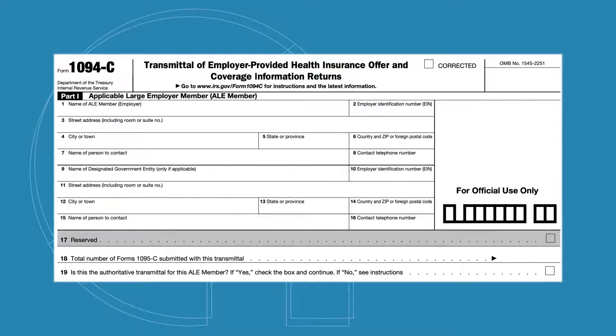And that includes a 1095 and there's a 1094C that's pretty much just a summary of the company's 1095 forms. And so this helps the IRS determine whether employees were eligible for subsidies and therefore whether there could be any penalties for the employer in that year.